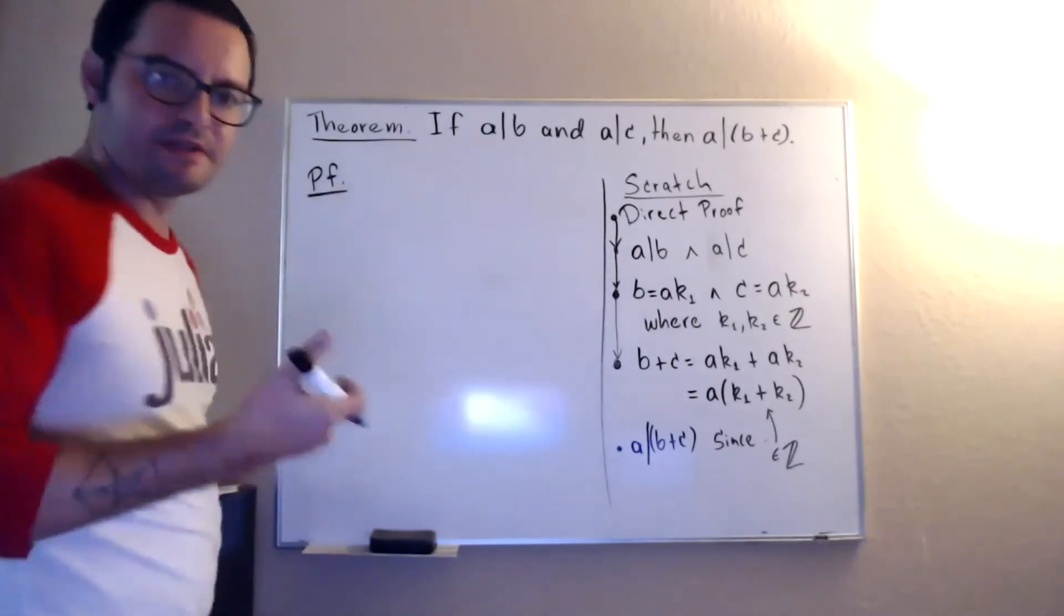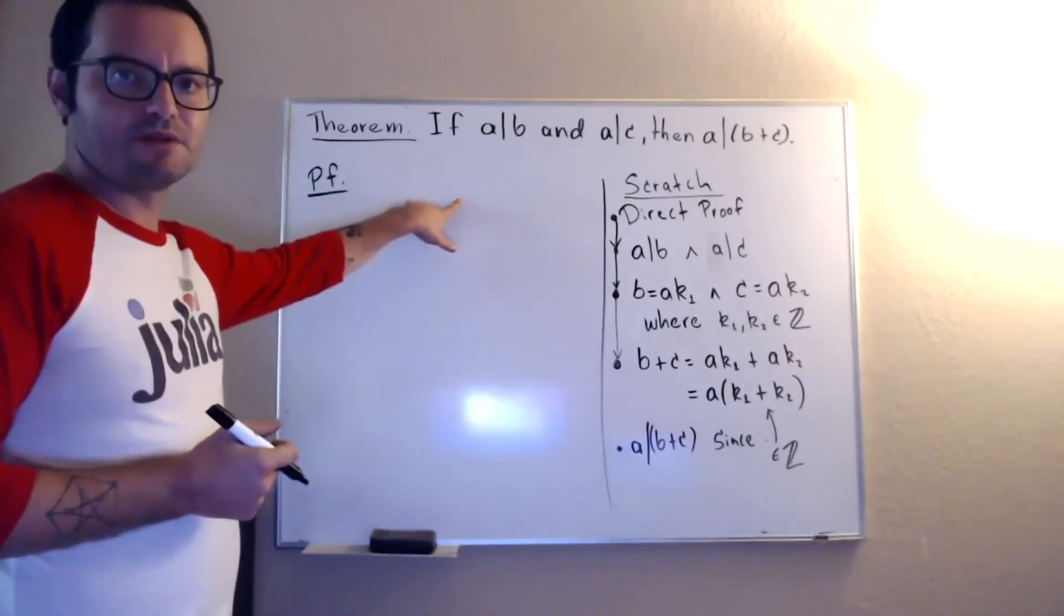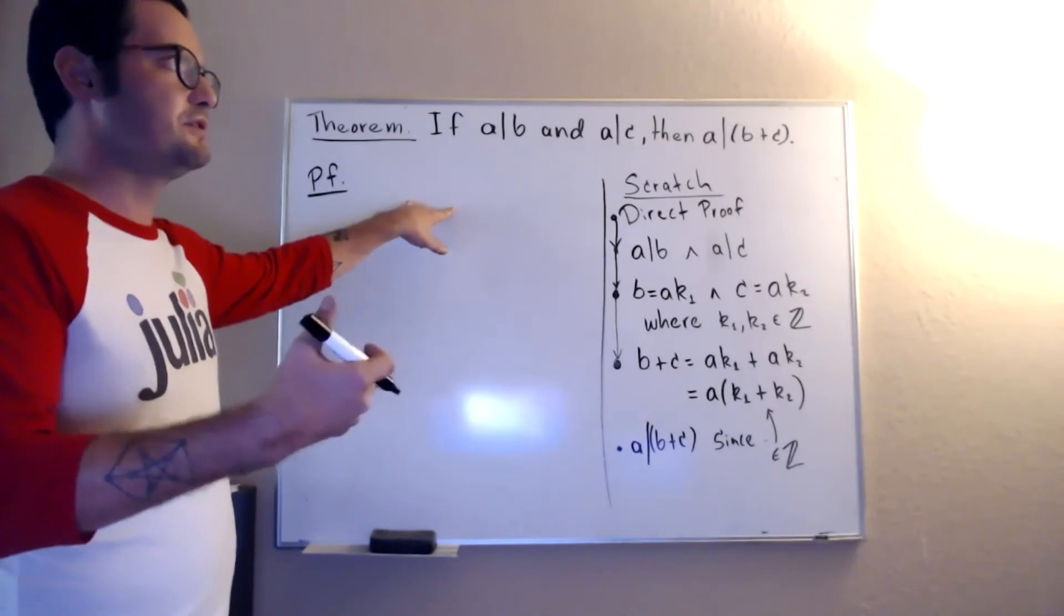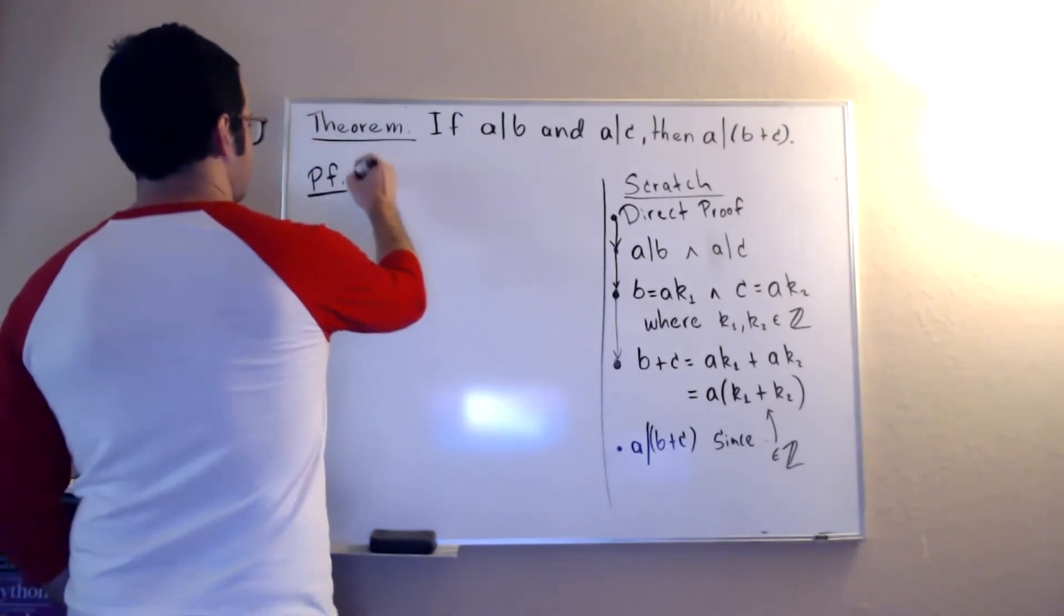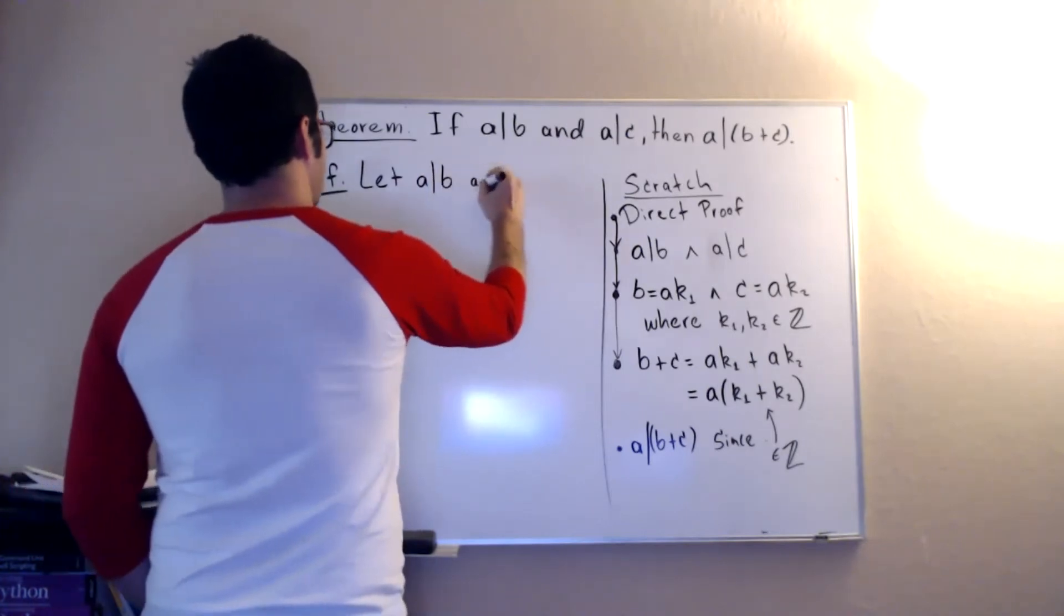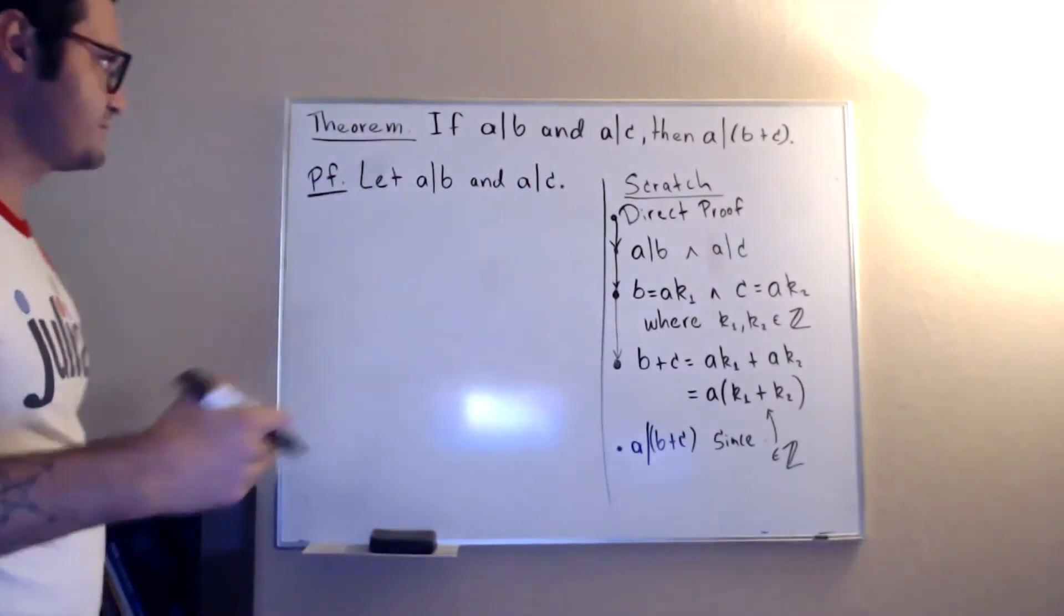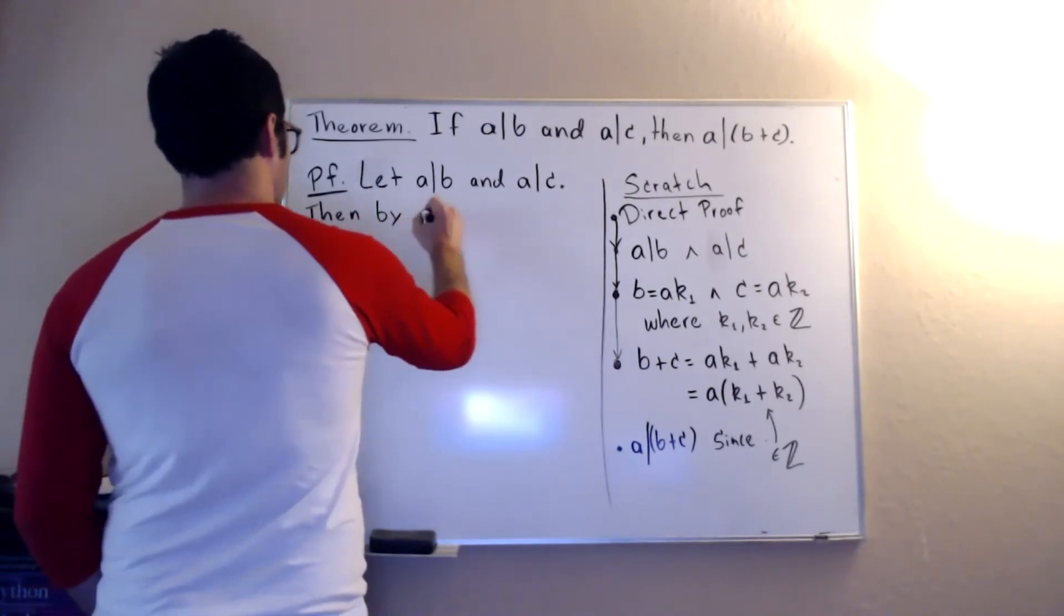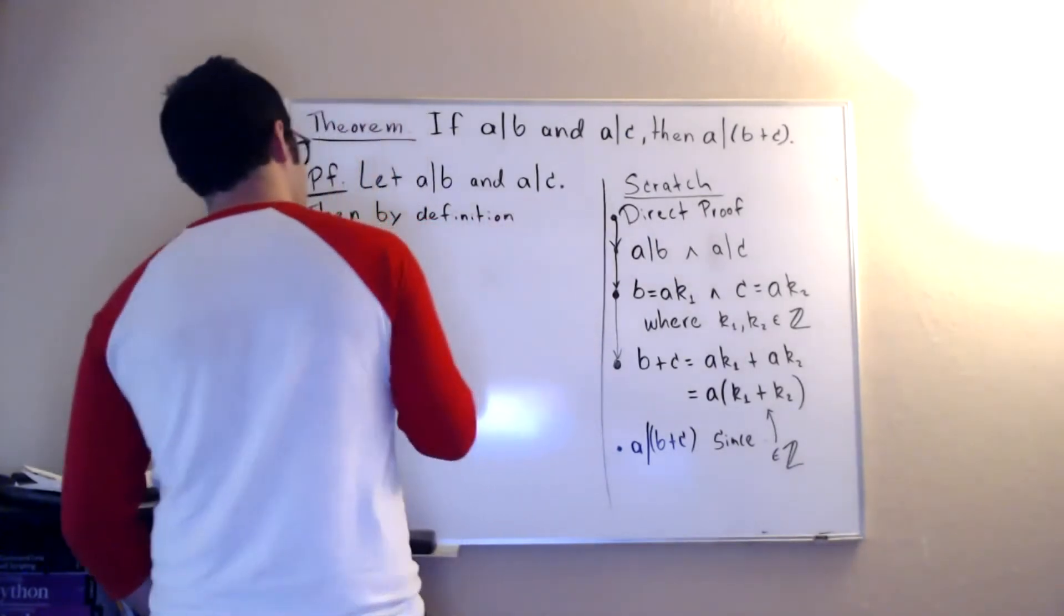Scratch board here again: assume the hypothesis, use the definition here, and then look at what we want to show. We want to show that that is a multiple of a, so we look at that, we use the definition there, factor out the a, and we see that a times this integer is that, so it satisfies the definition of being divisible. So let's look at the proof now.